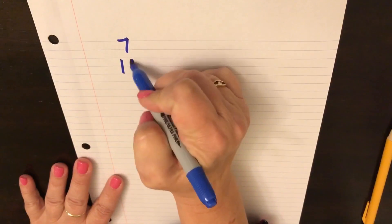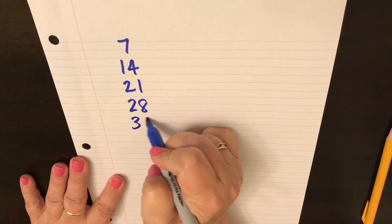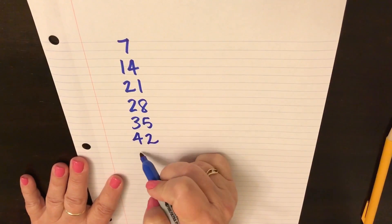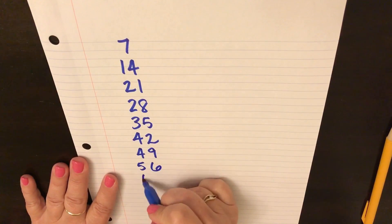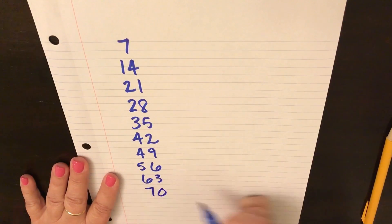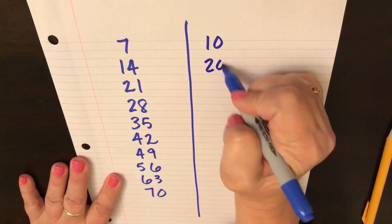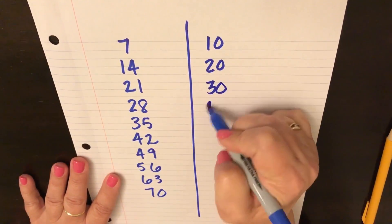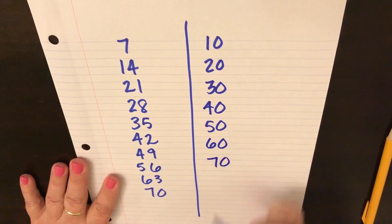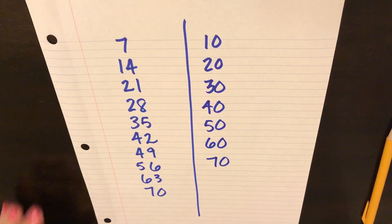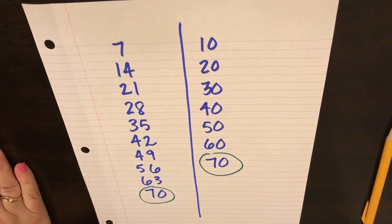We can make a list of multiples for each number. In other words, we're going to skip count by sevens and then skip count by tens, and find out which multiple is the same for both numbers. The first multiple that they both have in common, or the least common multiple, is 70.